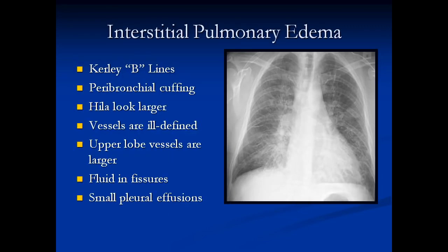Going a little further on, we start to see more lines and different things happen. We get curly B lines — these perpendicular lines — which are due to fluid in the intralobular septa of the lung. We get peribronchial cuffing, which you can see in the hilar regions, and we get fluid in the fissures as well. The hila are all big here, the vessels are ill-defined and indistinct. This is interstitial pulmonary edema.